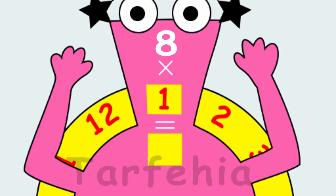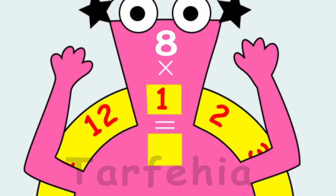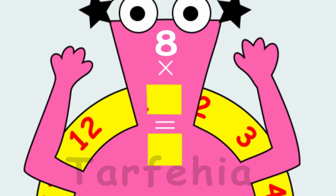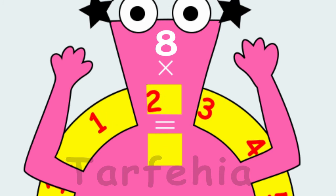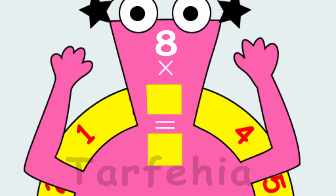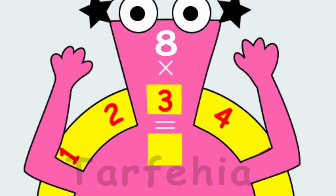8 times 1 equals 8. 8 times 2 equals 16. 8 times 3 equals 24.